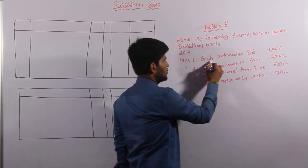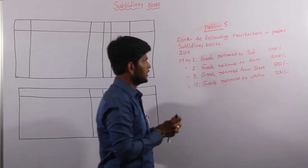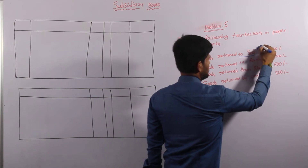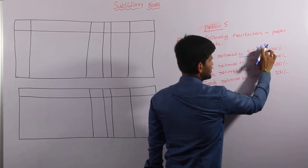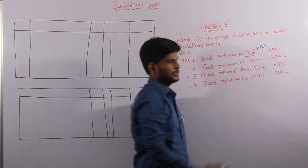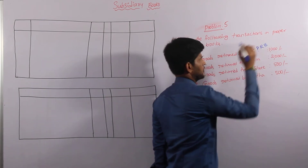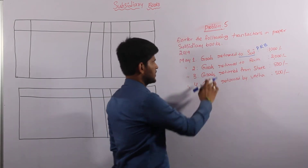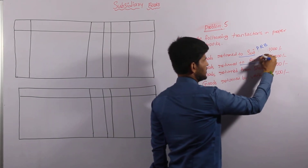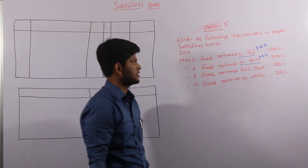Come to the first one, May 1st: goods return to Sai. Goods return TO Sai means we are returning goods to Sai, so it will go to the Purchase Return Book. Next one: goods return to Ram. Return to Ram is also a Purchase Return Book entry. It also goes to the Purchase Return Book.